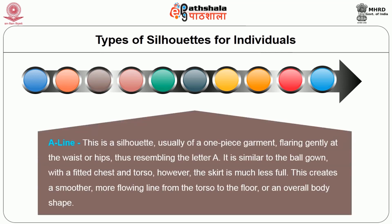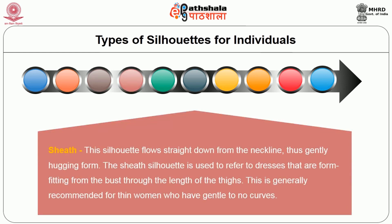Empire style of silhouette has a waistline which is raised to directly beneath the bust with a skirt that flares slightly from the raised waist down. This dress is particularly recommended for women who do not have a definite waist but is not recommended for women with a pronounced hourglass shape. A-line silhouette is usually a one-piece garment. It flares gently at the waist or hips thus resembling the letter A. It is similar to the ball gown with a fitted chest and torso. However, the skirt is much less full, creating a smoother, more flowing line from the torso to the floor.